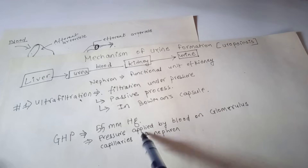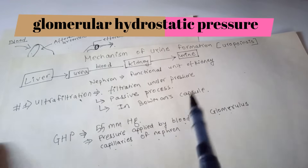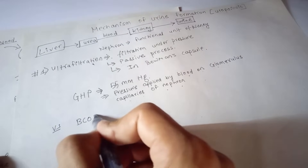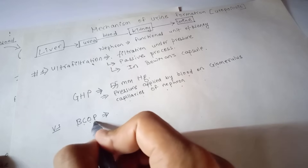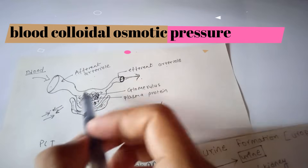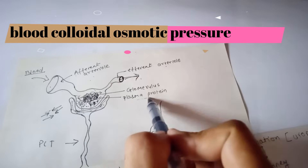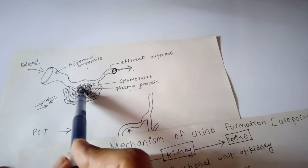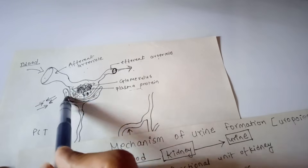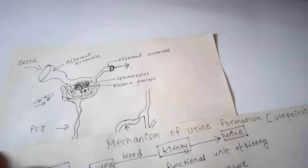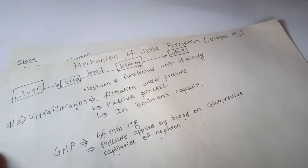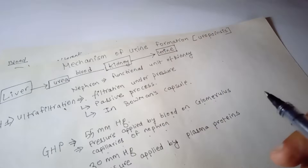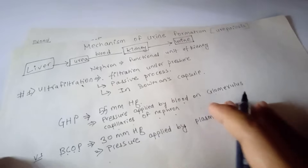GHP (glomerular hydrostatic pressure) is the pressure applied by blood on the glomerulus capillaries of the nephron. There is also BCOP, which stands for blood colloidal osmotic pressure. BCOP is about 30 mmHg, and it is the pressure applied by plasma proteins in the opposite direction.